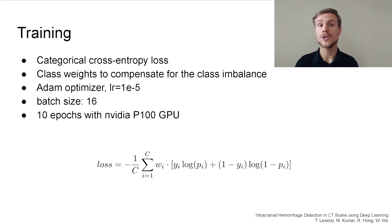As a loss function, we use categorical cross-entropy loss, to which we add class weights in order to compensate for the high class imbalance. We use ADAM optimizer with learning rate visible on the screen, and determined via hyperparameter optimization. We use batch size of 16 and train for 10 epochs, which translates to roughly 48 hours on an NVIDIA P100 GPU.